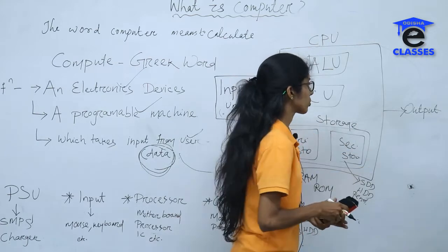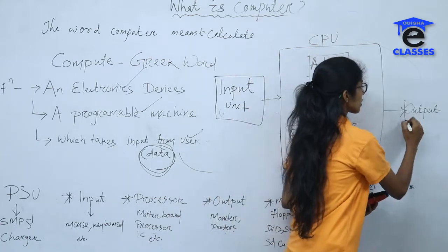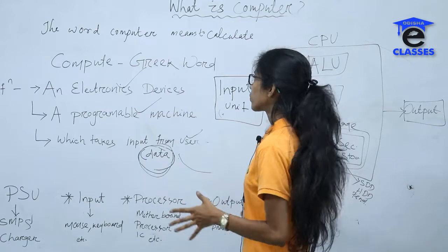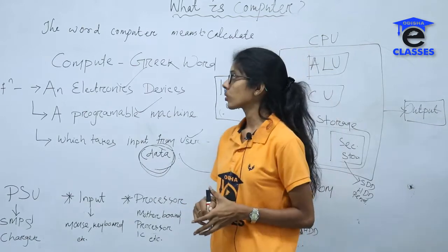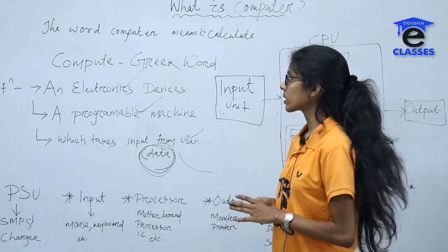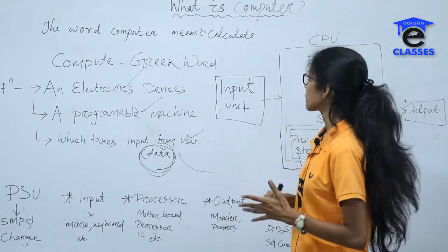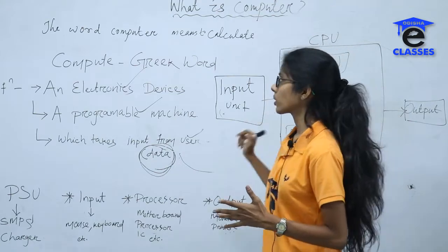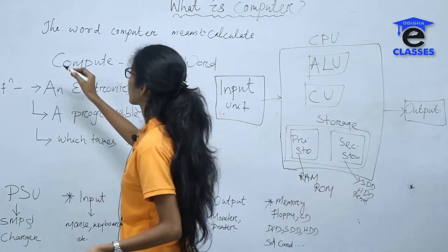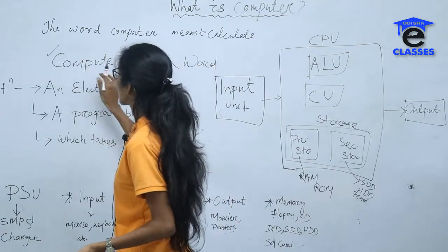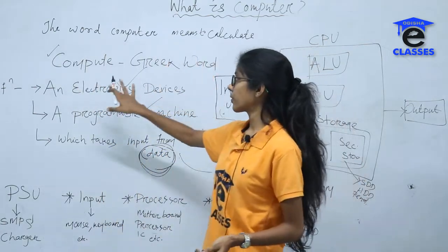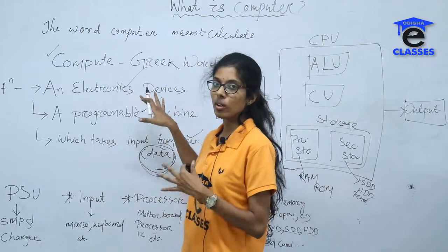So that's all for today. To summarize: we covered the definition of computer, the Greek word 'compute' meaning to calculate, and the computer definition — that it is an electronic device and a programmable machine.